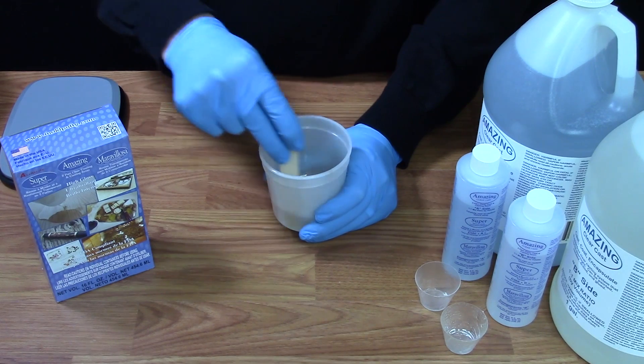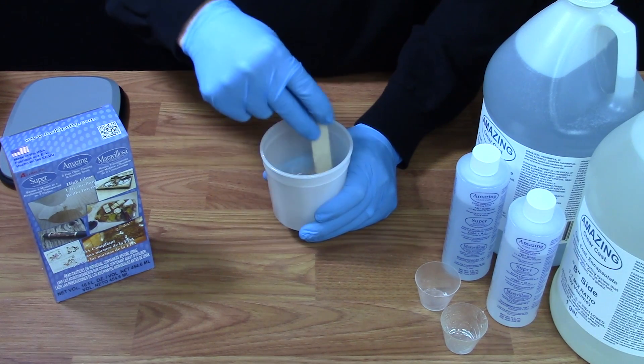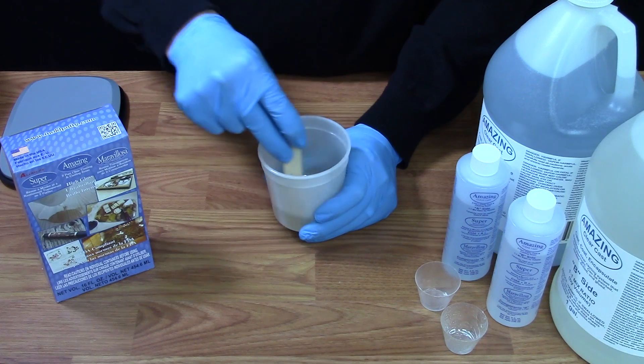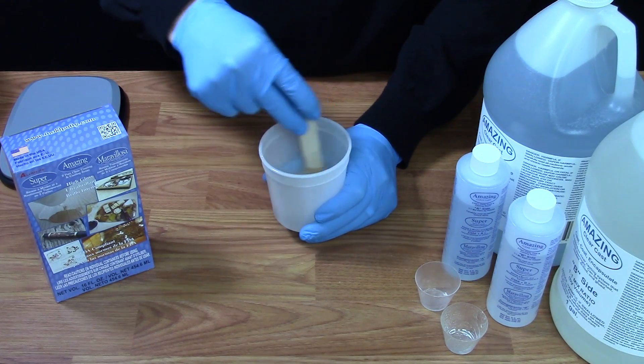While stirring, you should be looking for both of those sides inside your cup to disappear so you don't see any striations between the two sides.